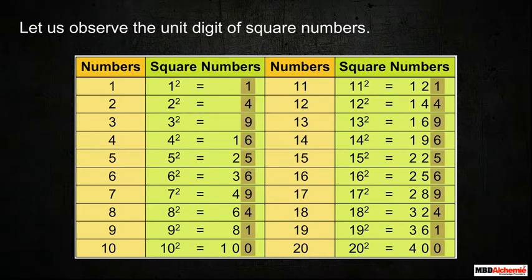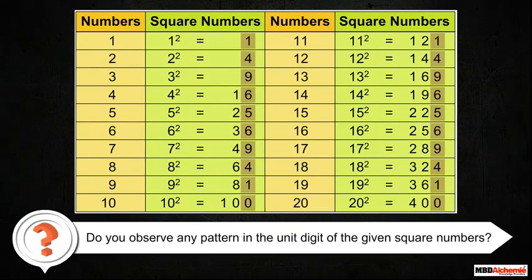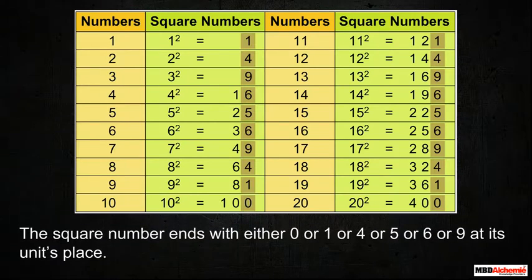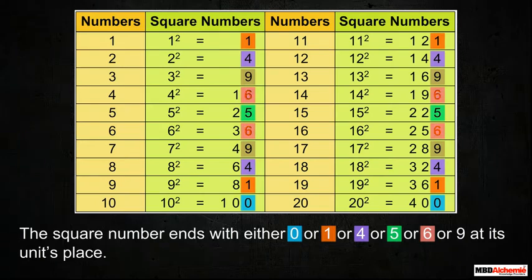Let us observe the unit digit of square numbers. Do you observe any pattern in the unit digit of the given square numbers? As we see, the square number ends with either 0, or 1, or 4, or 5, or 6, or 9 at its unit's place.